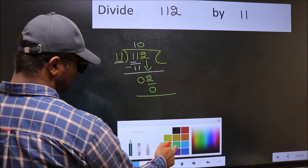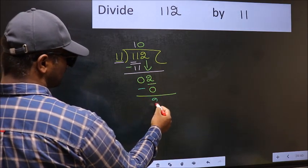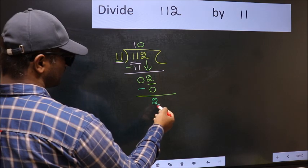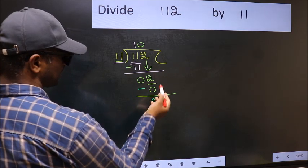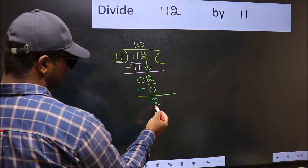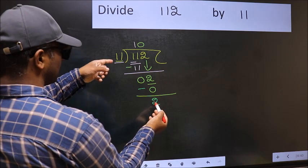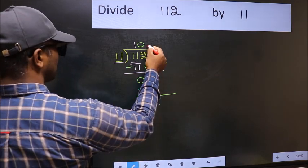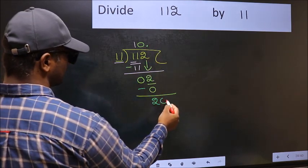Now you should subtract. 2 minus 0, 2. Over here, we did not bring any number down. And 2 is smaller than 11.